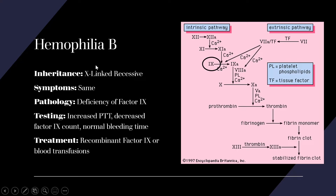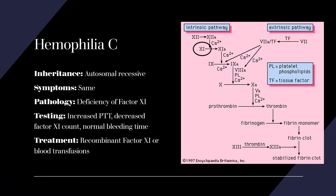Hemophilia B is also X-linked recessive, with the same symptoms as A. B is a deficiency of factor IX — if A is VIII, go up one to IX. PTT is increased, factor IX count is decreased. Treatment is recombinant factor IX or whole blood transfusion. Hemophilia C is autosomal recessive — not X-linked, so don't get tricked. It's a deficiency of factor XI. Remember: A is VIII, B is IX — don't think C is X; skip to XI. Treatment is recombinant or whole blood transfusion.